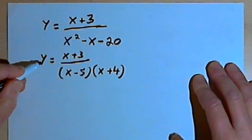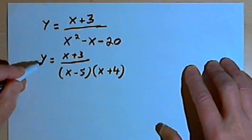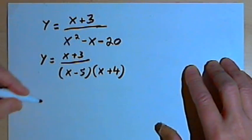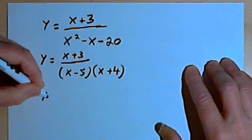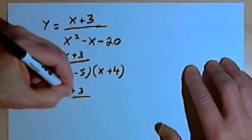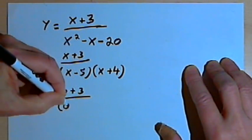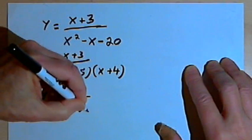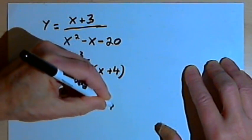And if we want to find the y-intercept, we have to remember that x is going to equal 0 at that point. So we'll turn all the x's into zeros. So we're going to have y equals 0 plus 3 over 0 minus 5 times 0 plus 4.